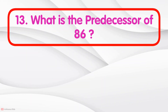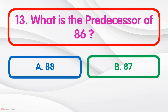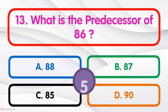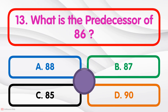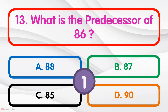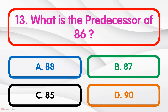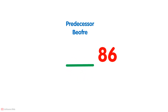What is the preceder of 86? 85. Preceder means before the number. So in counting, 85 comes before 86.